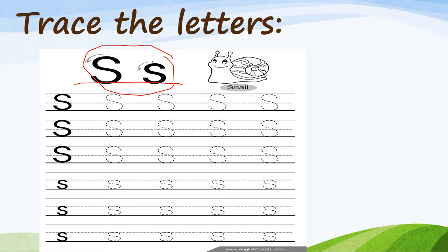Here is the big letter S — you have to trace it nicely. Next, it's also the same process when you wrote your big letter S. The only difference is that you need to make it small. So this is your big letter S, and then we have your small letter S. Look at the difference — it's big, and then we have your small.